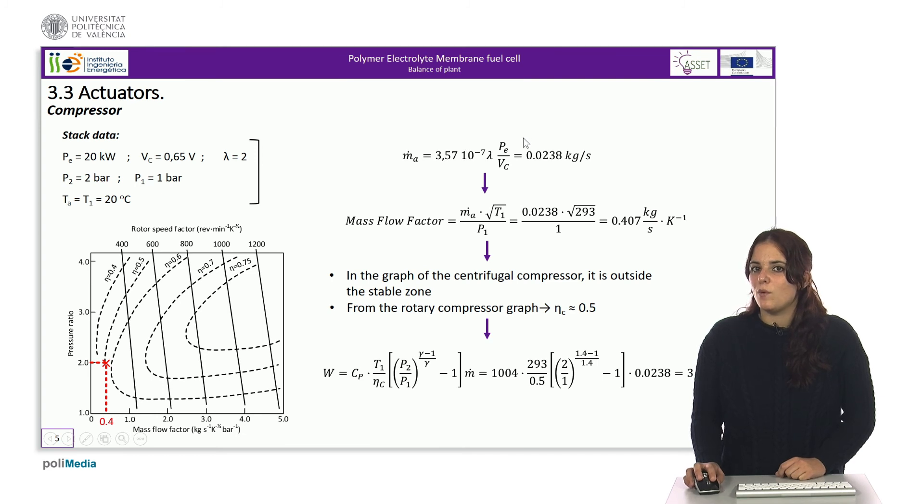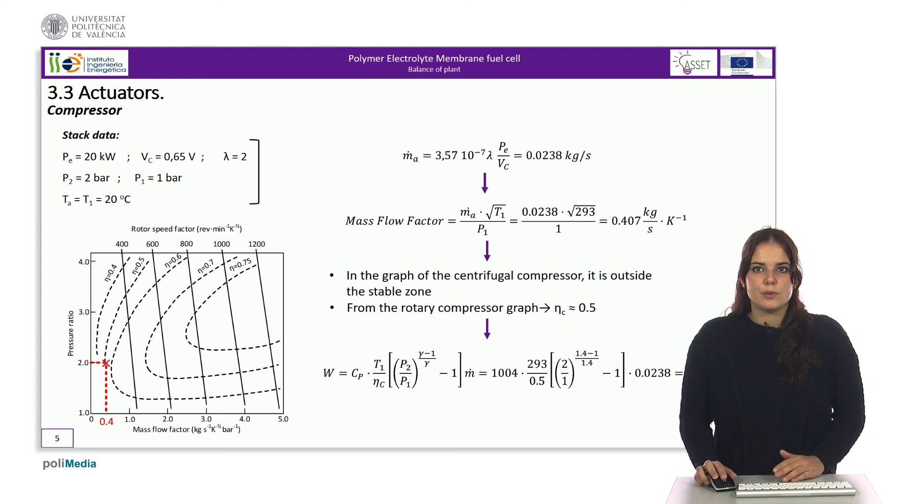With this value, the mass flow factor coefficient is calculated. Considering that the pressure ratio is 2, we check if the centrifugal compressor is viable and we see that the operating point is above the surge line.